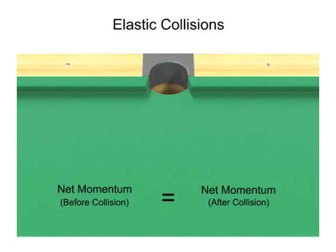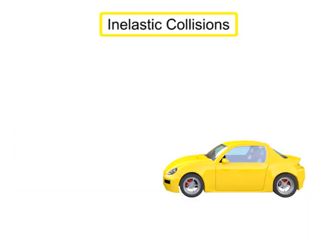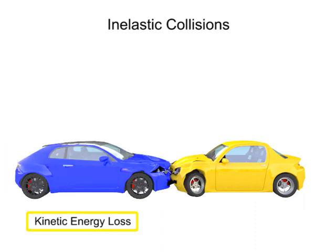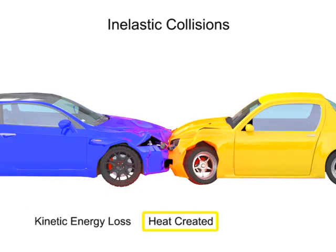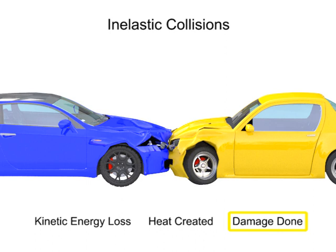The second type of collision is an inelastic collision. In an inelastic collision, momentum is still conserved, but kinetic energy is lost in the system, resulting in the creation of heat and damage done to the colliding bodies. Bodies involved in an inelastic collision end up entangled with each other or stuck together.